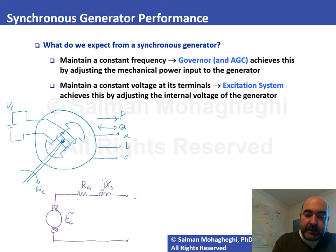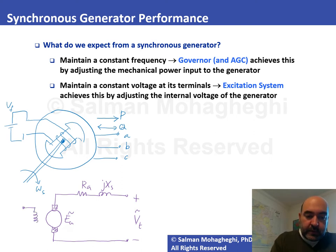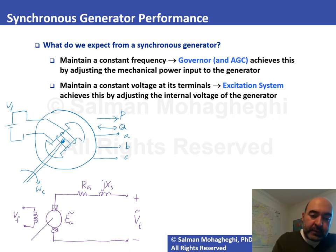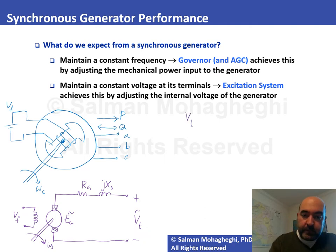Whatever remains from E_A is reflected at the output terminals, shown as V_T (a phasor). The field winding with voltage V_f drives the internal voltage. The shaft rotates at speed ω_s. For a generator, two things are important: maintaining the desired terminal voltage magnitude V_T, and maintaining the system frequency ω_s.